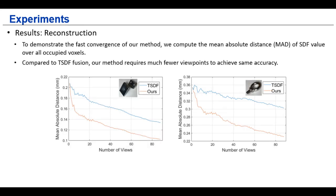And to demonstrate the fast convergence of our approach, we compute the MAD of the signed-distance functions for all occupied voxels. As demonstrated in these two examples, the TSDF fusion generally has a slow convergence. And in comparison, our method requires much fewer viewpoints to achieve the same accuracy.